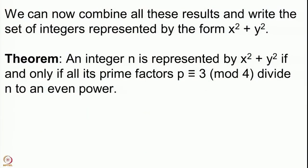We can now combine all these results and characterize the set of integers represented by x² + y²: An integer n is represented by x² + y² if and only if all its prime factors p ≡ 3 mod 4 divide n to an even power. The only condition is on the factors of n which are congruent to 3 mod 4 — these prime factors should come with an even power. There is no condition on the powers of 2, and no condition on the powers of primes congruent to 1 mod 4.